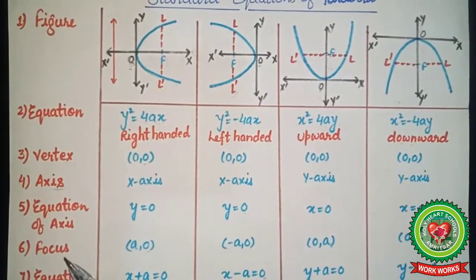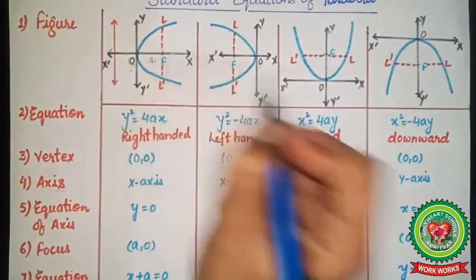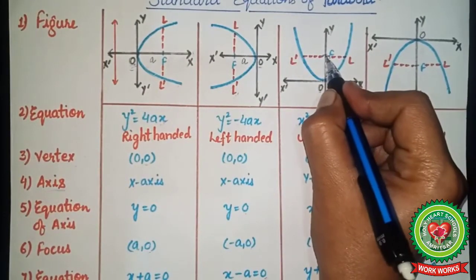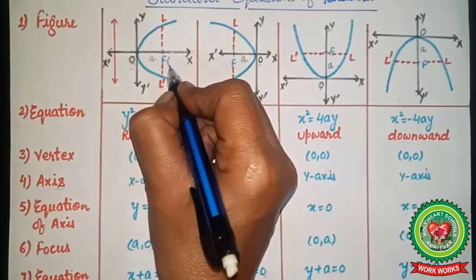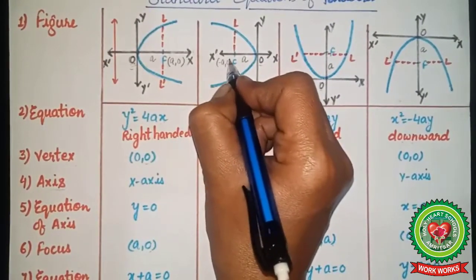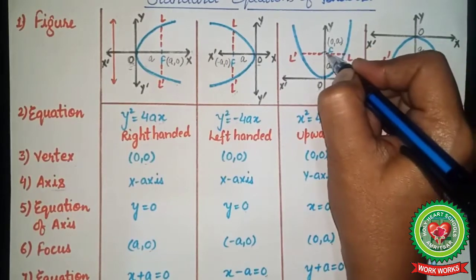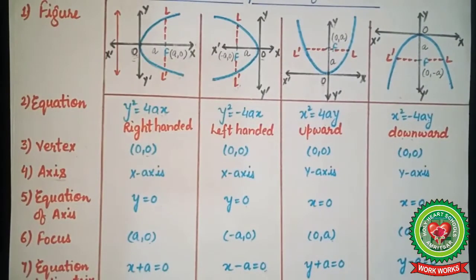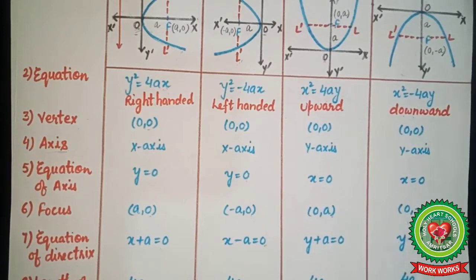Next is focus. The focus is a point on the axis at a fixed distance a. The coordinates of the focus are: (a, 0) for the right-handed parabola, (−a, 0) for the left-handed parabola, (0, a) for the upward parabola — since it lies on the y-axis — and (0, −a) for the downward parabola.